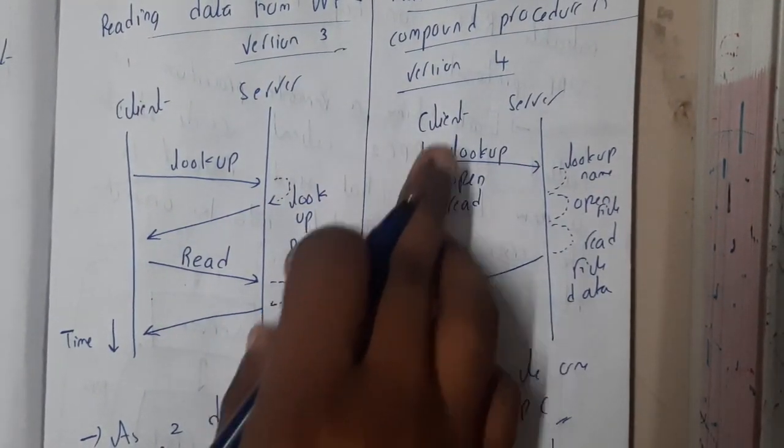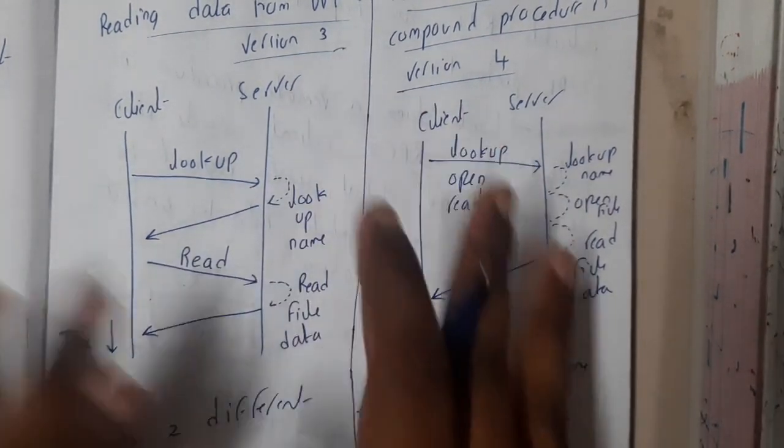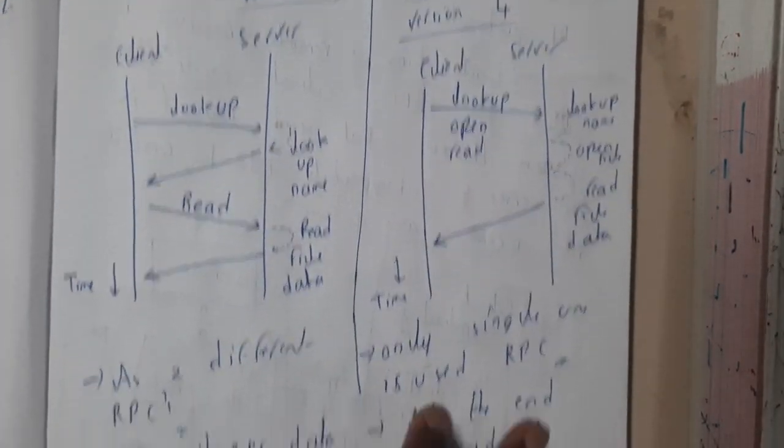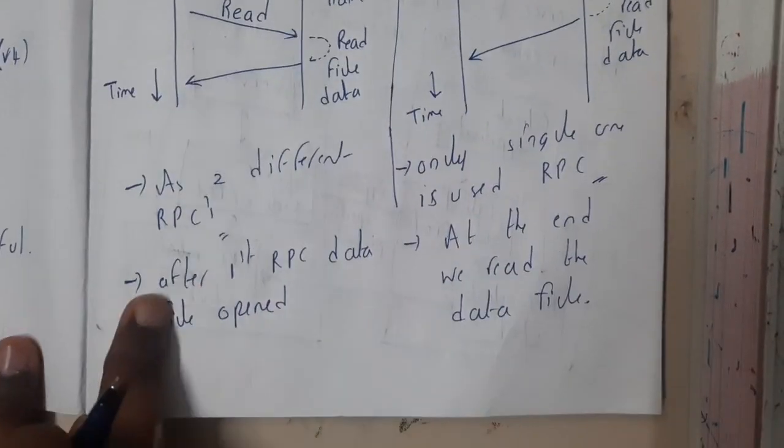Whereas in version four, once he can do all the operations - look up, open, read. So he looked at the data, he opened the data, he read the data and he returned back. So the major difference between the stateless and stateful is this only. As two different RPCs are required here, only one RPC is required. So after first RPC the data is opened and at the end we receive the data file.